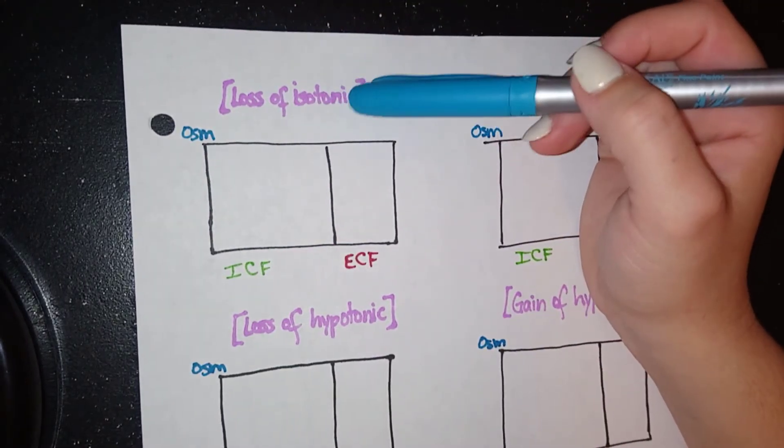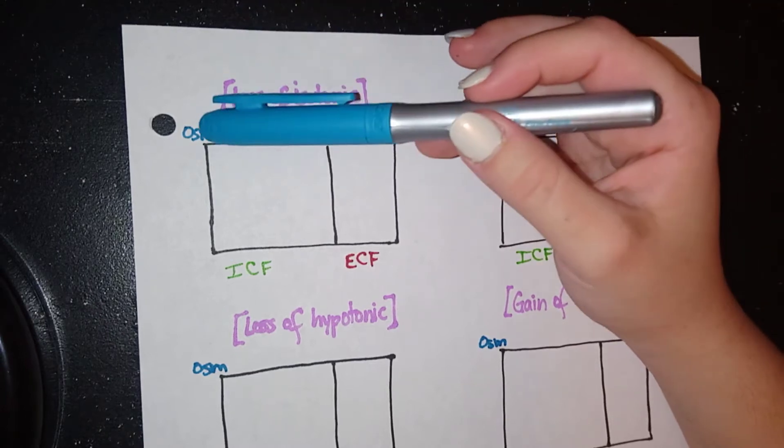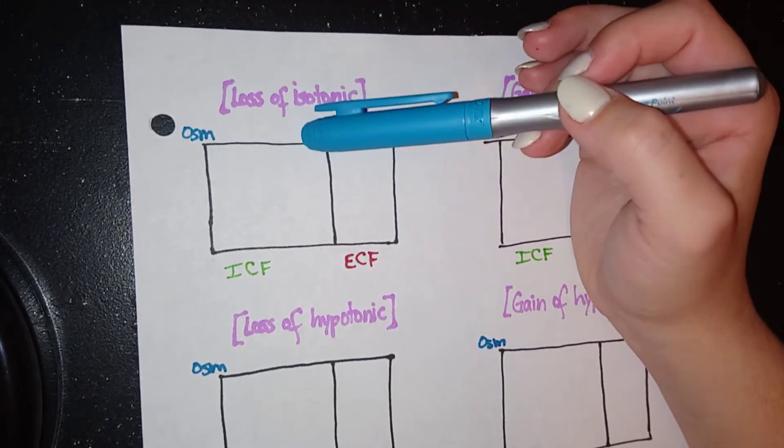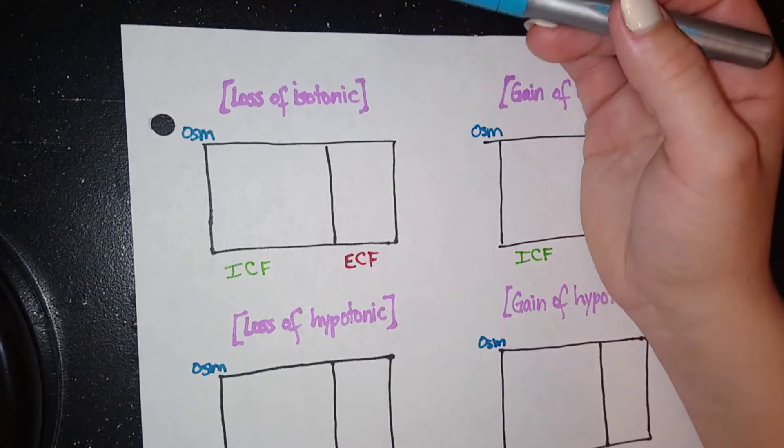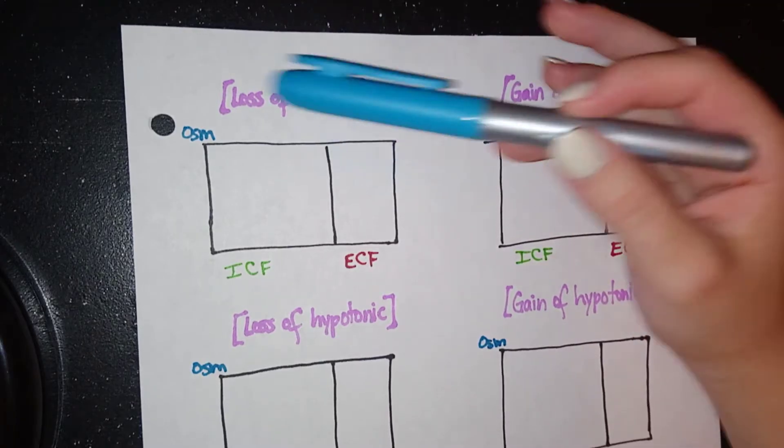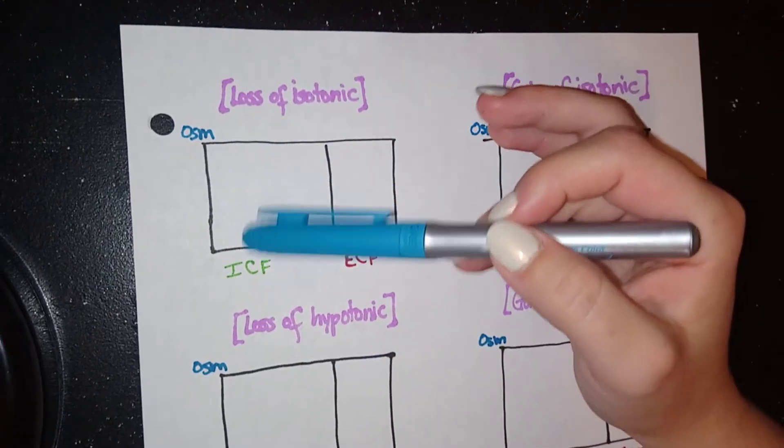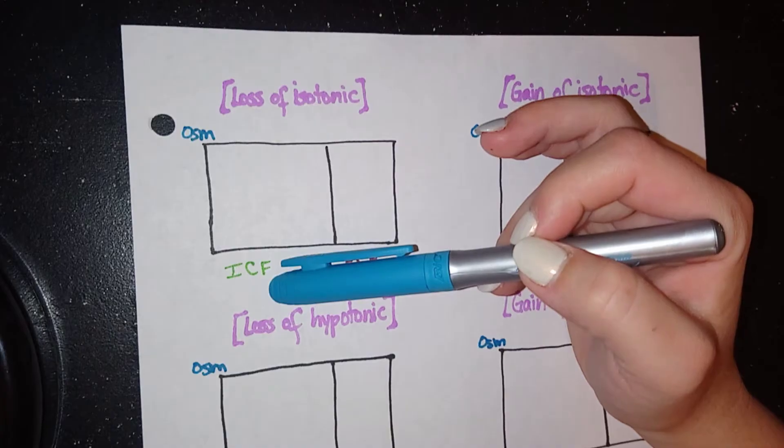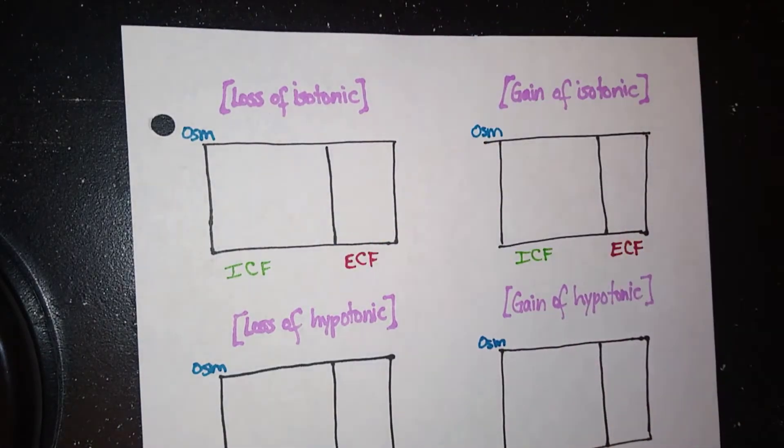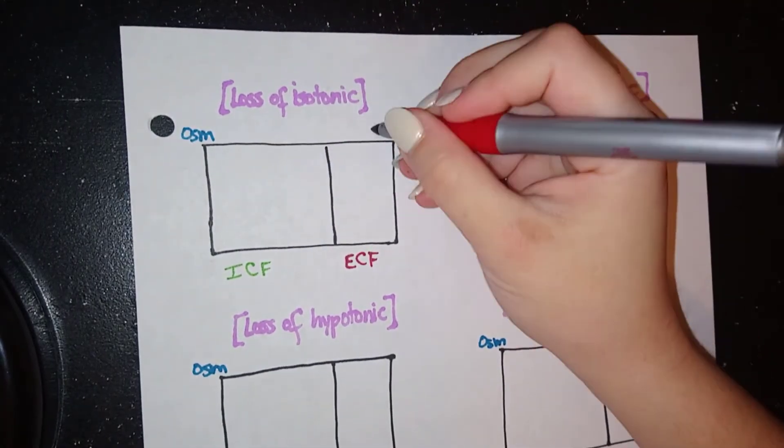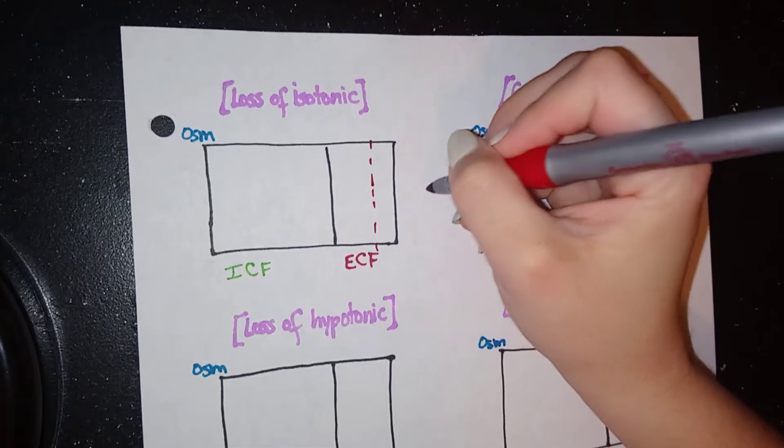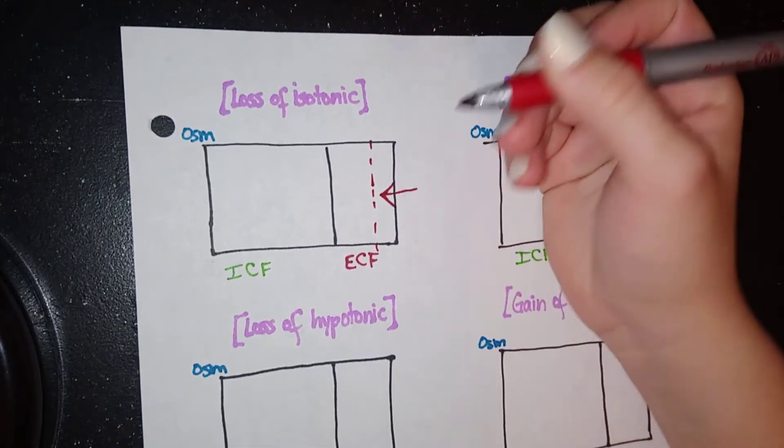So in the case of isotonic fluid loss, we don't have a change in osmolarity because we have lost water and solutes at about an equal amount. So this remains the same, meaning I will completely ignore ICF in this case and only focus on ECF. The extracellular compartment, in this case, since we're losing fluid, will decrease. And that is it.